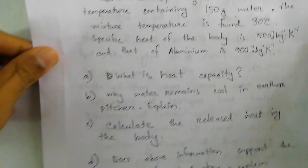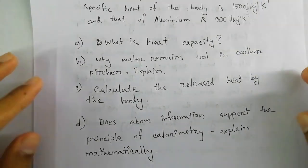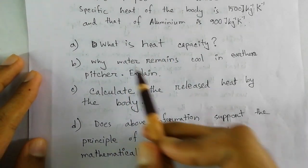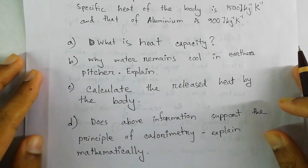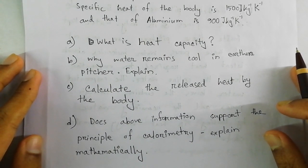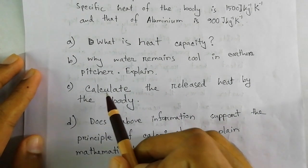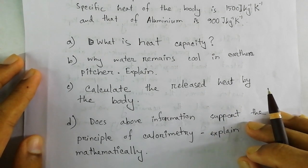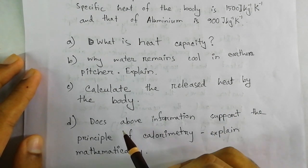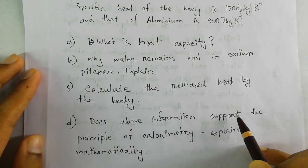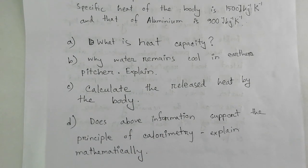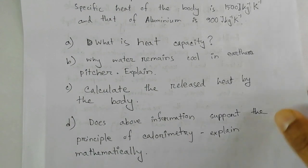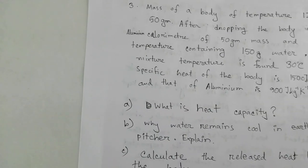The questions ask: first, what is heat capacity — we have to define it; second, why does water remain cool in an earthen pot or pitcher — explain; third, calculate the heat released by the body from the given data; and fourth, explain if the data supports the principle of calorimetry or not. We will solve each question step by step.